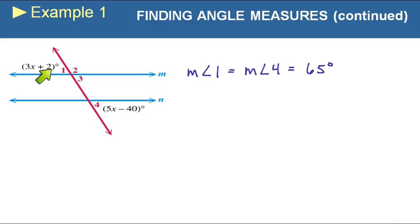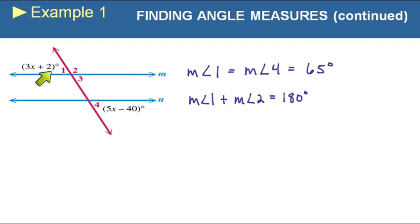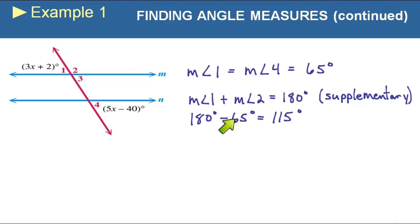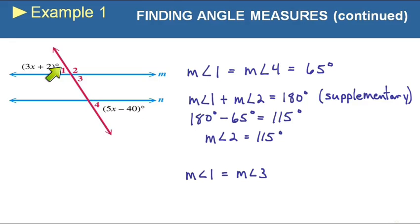Now applying that to angles 2 and 3: angle 1 plus angle 2 must make 180 degrees — in other words, they're supplementary. So 65° + angle 2 = 180°, meaning angle 2 = 115°. We also know that angles 1 and 3 are vertical angles, so they are equal. Therefore angle 3 is 65 degrees.